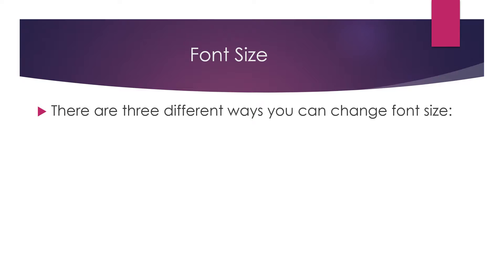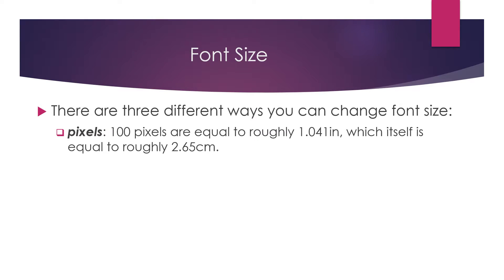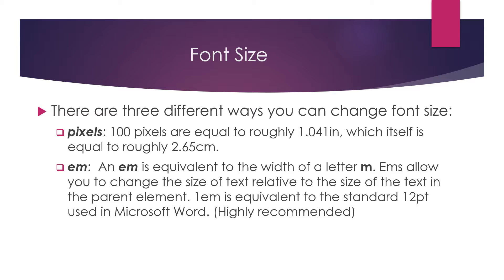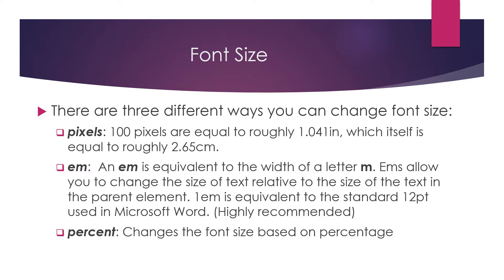Font size: there are three different ways you can change font size. You can use pixels — 100 pixels are equal to roughly 1.041 inches, which is equal to roughly 2.65 centimeters. You can use EM — EM is equivalent to the width of the letter M. EMs allow you to change the size of text relative to the parent element; 1 EM is equivalent to the standard 12-point font used in Microsoft. EMs are highly recommended because they will adjust to the window of your screen, whether phone, tablet, or PC. You can also use percentages, though this is not usually recommended for font size.